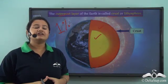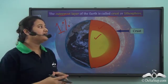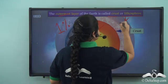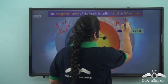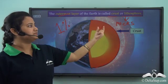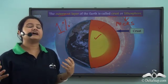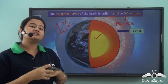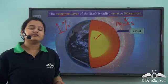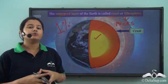Another name for crust is lithosphere, a Greek word where 'litho' means land or rocks. As the name suggests, the crust is composed of different types of rocks, which are also rich in different minerals. So different minerals and rocks are found at this outermost layer of the Earth.